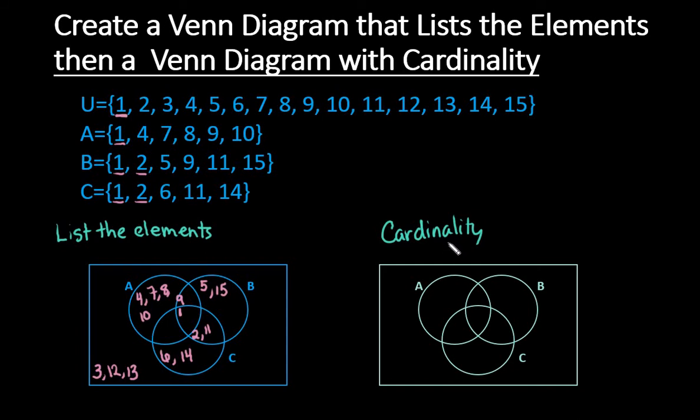So the cardinality, remember, is just the number in that particular region. So if I look at just in A but not B or C, I can see that there's 1, 2, 3, 4 values that fall there. So there's 4 that fall in this region. I have 1 that are in both A and B but not C. I have 1 that falls in all 3 of them.